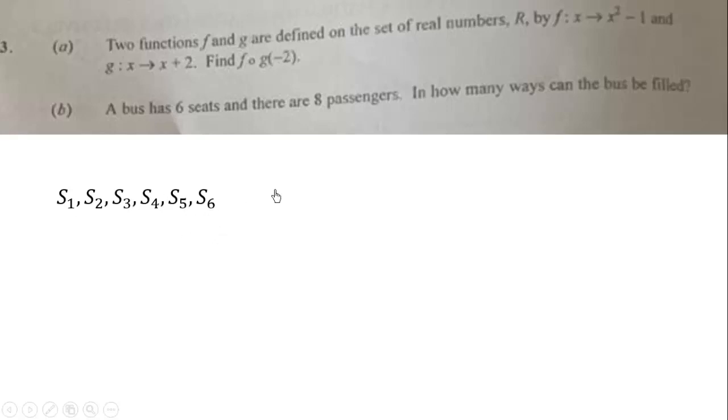In this case, we are not repeating anything. No two passengers can sit on one seat. Hence, when we have permutations of n distinct objects among r different places, repetition is not allowed, and we have the formula nPr given by n! over (n - r)!.